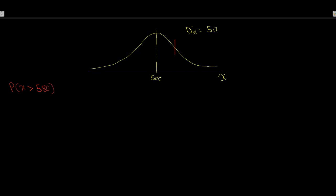So that's our 500, drop down 580 somewhere like so. There's our 580, and we're looking at what's the probability that X is greater than 580 — we're looking for this red shaded area in this scenario. Well, first thing we have to do, just like before, we have to convert this to a z.